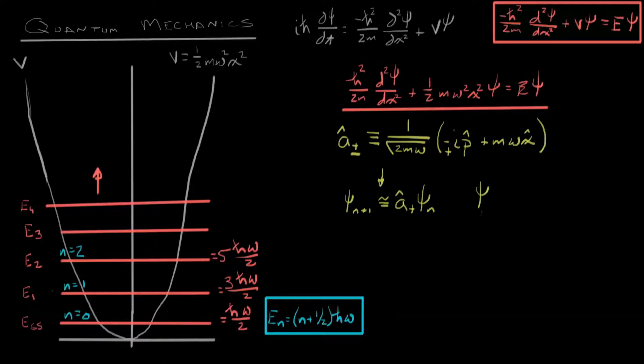In a similar way, if I want to go down a state, in other words, I'm starting at C of n, I can do the ladder, the lowering operator. Once again, not quite equal because we have to allow for normalization.